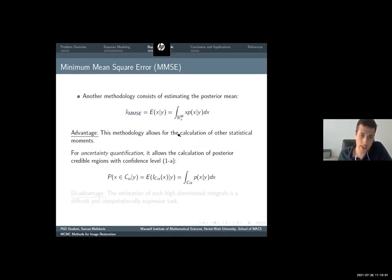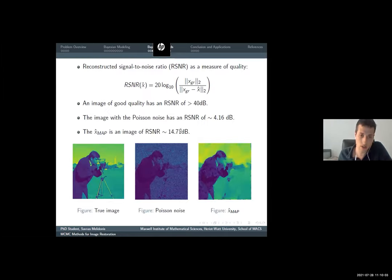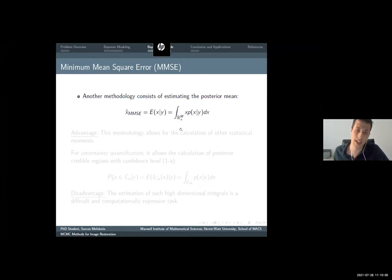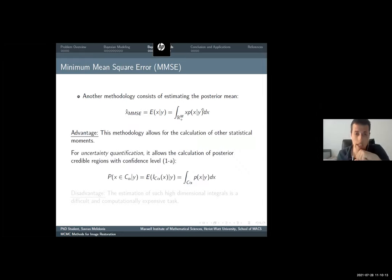The other methodology consists in general of estimating integrals, useful integrals, such as the posterior mean. This methodology is useful because it allows also for the calculation of other integrals and helps us quantify the uncertainty.